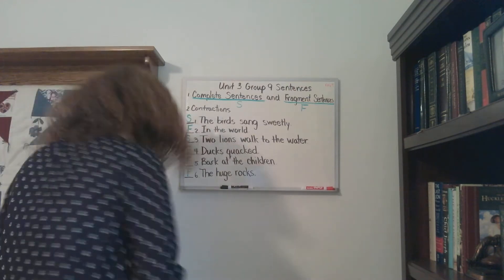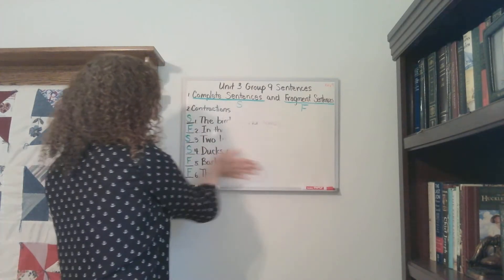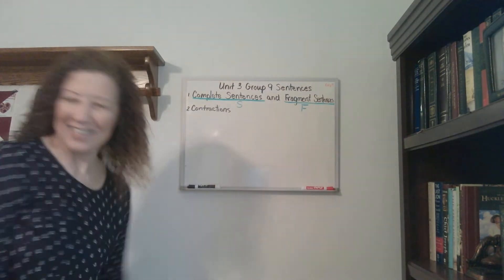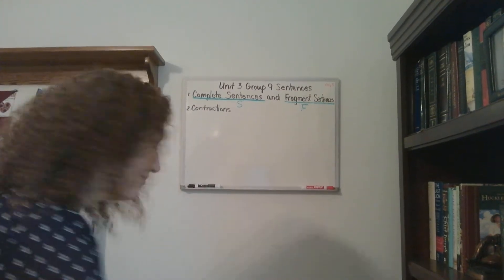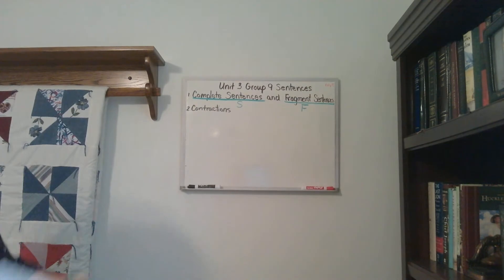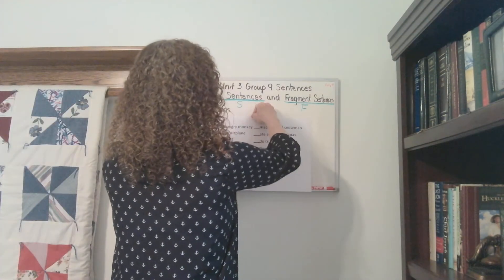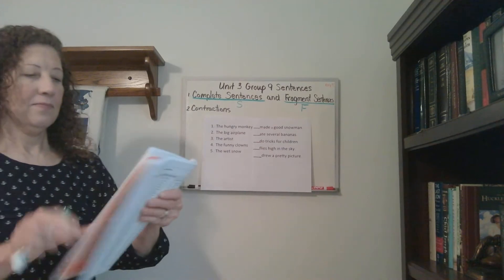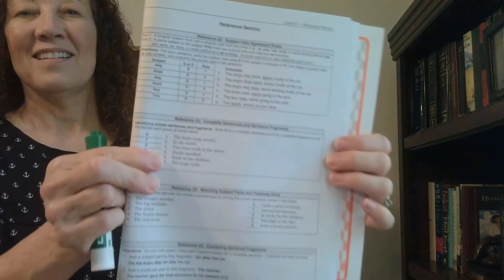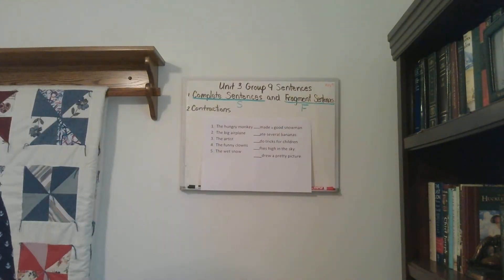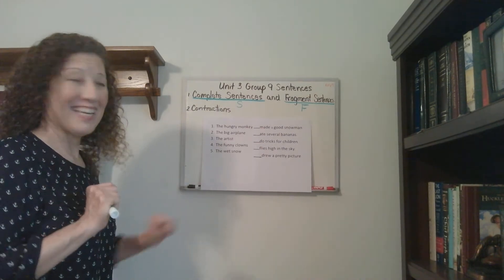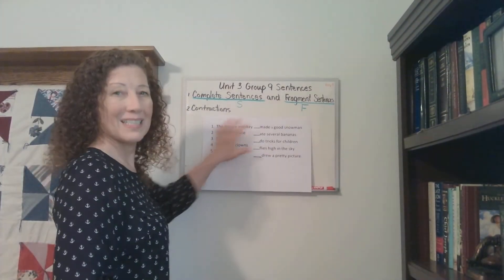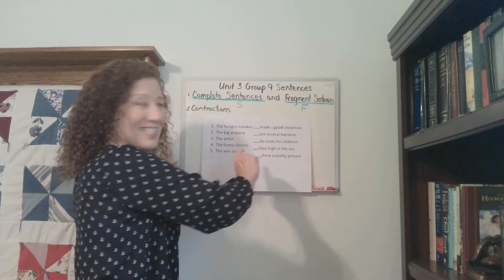See how easy that is? Alright, let's erase this and see if we can match up some complete subjects with some complete predicates. Now in your book, reference page 79. This will give you an idea of what we're doing here. If you get stuck, you can just go back and look at that reference page. Now for matching our sentences, we're matching the complete subject with a complete predicate. Let's read the predicates first and see what it's talking about.